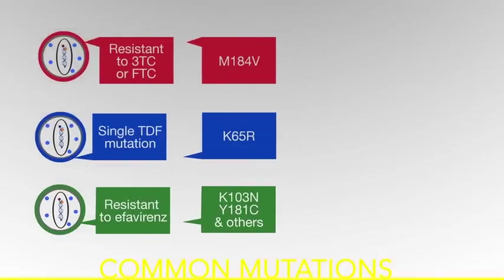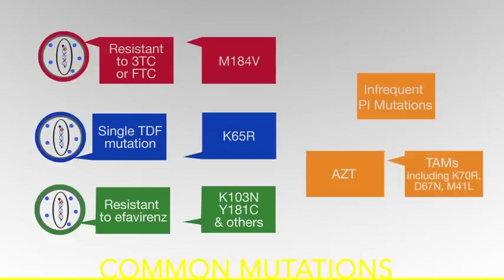In second line failure, we see fairly infrequent protease inhibitor mutations, but for AZT we get the thymidine analog mutations, or TAMs, which include K70R, D67N, and M41L.